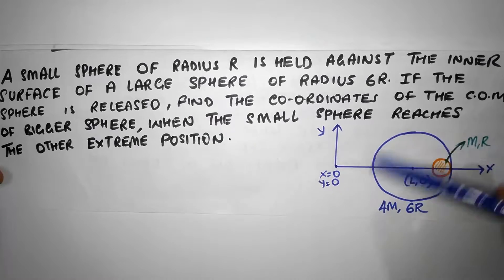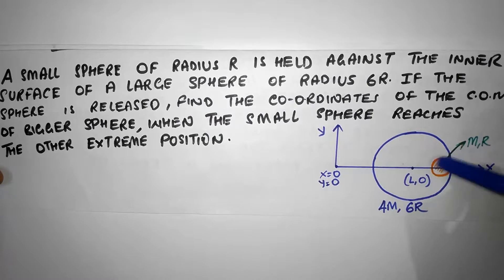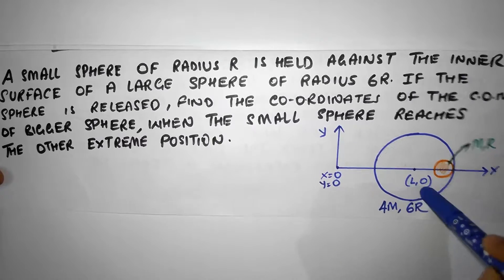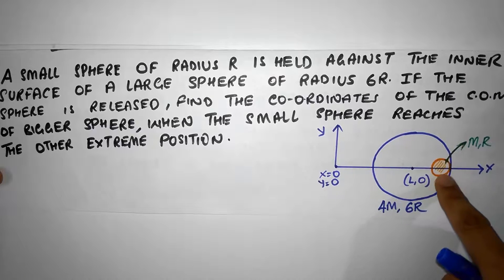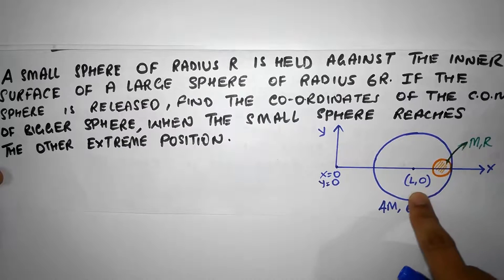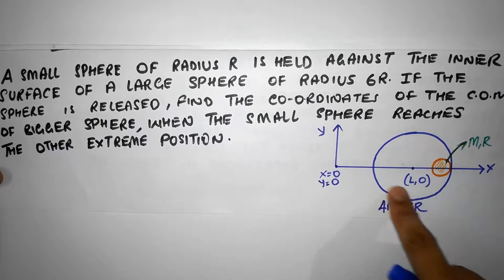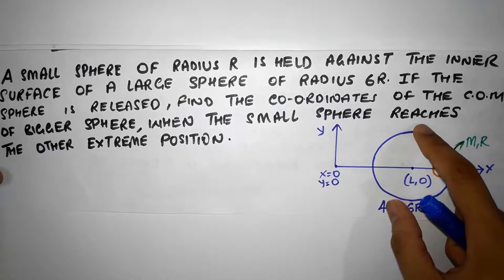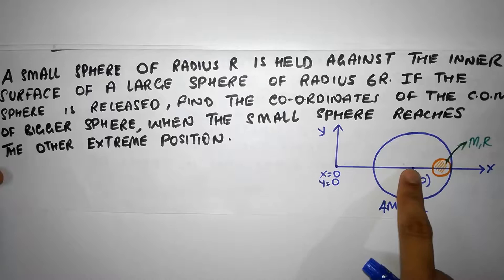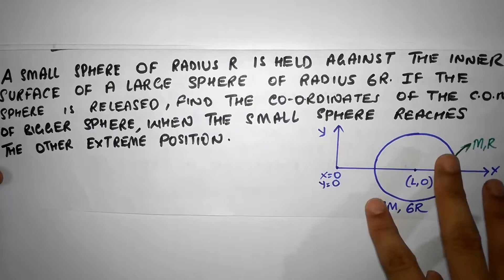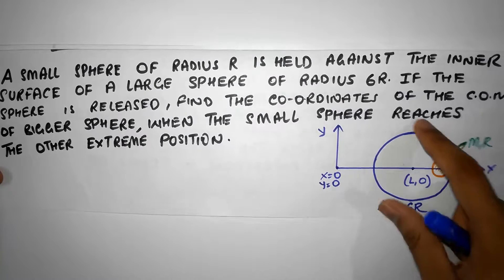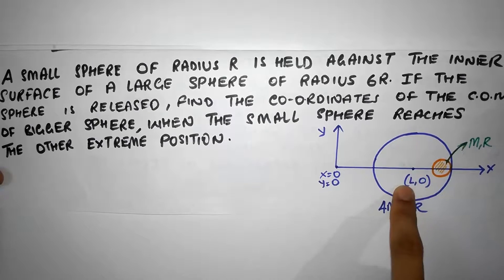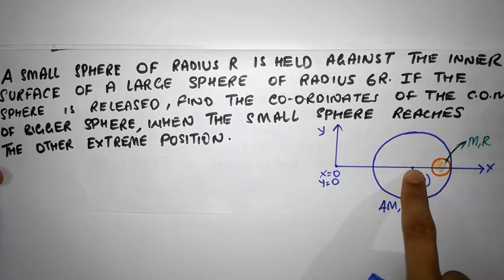We have a big sphere inside which we have a small sphere of mass m and radius r. The big sphere has mass 4m and radius 6r, and it's currently located at (L, 0). If we drop the small sphere it's going to roll down — there's no friction, the whole setup is on a table. As the small sphere rolls down and goes back, the whole system has to shift forward because the center of mass must remain at the same location — there are no external forces. So the question is: what's going to be the new position of the center of the big sphere?